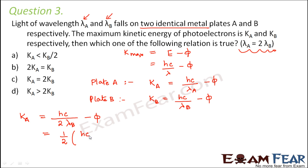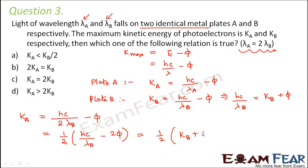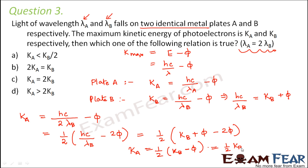Taking ½ common: Ka = ½(hc/λb) − φ. From the equation for plate B, hc/λb = Kb + φ, so substituting: Ka = ½(Kb + φ) − φ = ½Kb + φ/2 − φ = ½Kb − φ/2.